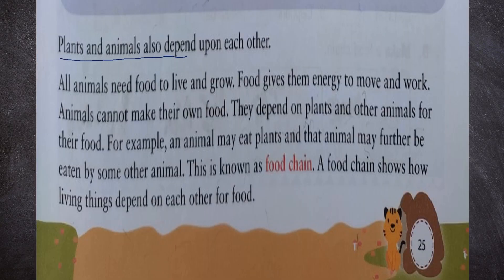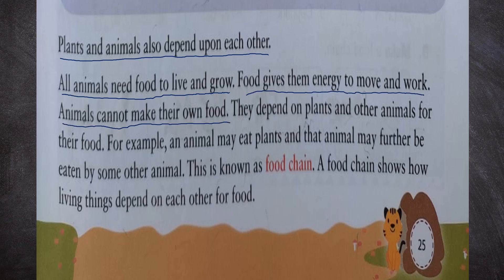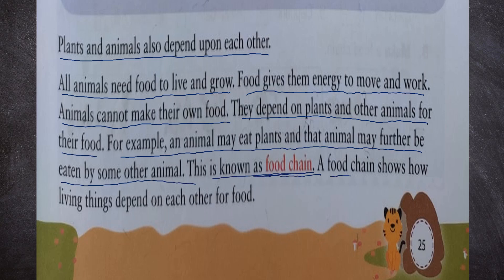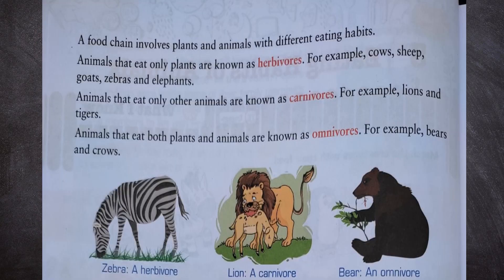Plants and animals also depend upon each other. All animals need food to live and grow. Food gives them energy to move and work. Animals cannot make their own food — they depend on plants and other animals for their food. An animal may eat plants and that animal may further be eaten by some other animal. This is known as a food chain. A food chain shows how living things depend on each other for food, involving plants and animals with different eating habits.